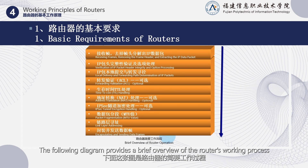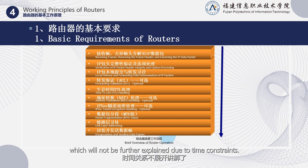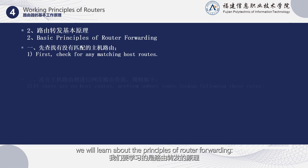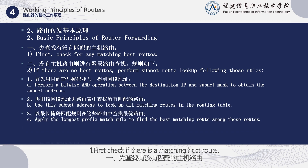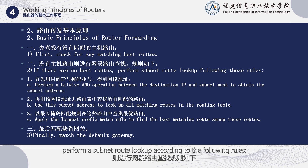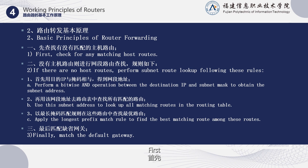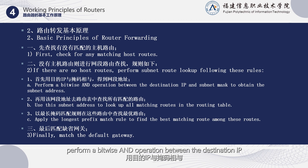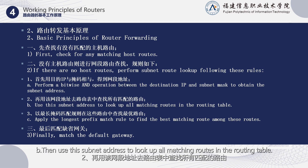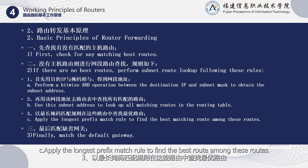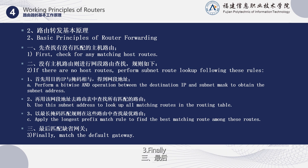The following diagram provides a brief overview of the router's working process. Next, we will learn about the principles of router forwarding. First, check if there is a matching host route. If there is no host route, perform a subnet route lookup according to the following rules: A. Perform a bitwise AND operation between the destination IP and the subnet mask to obtain the subnet address. B. Use this subnet address to look up all matching routes in the routing table. C. Apply the longest prefix match rule to find the best route. Finally, match the default gateway.